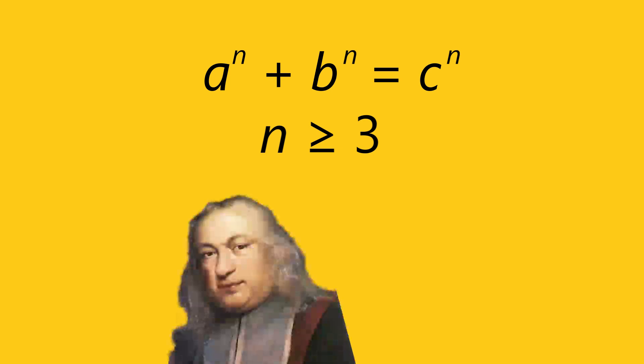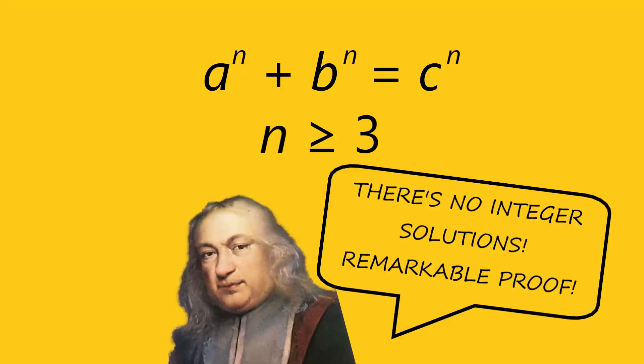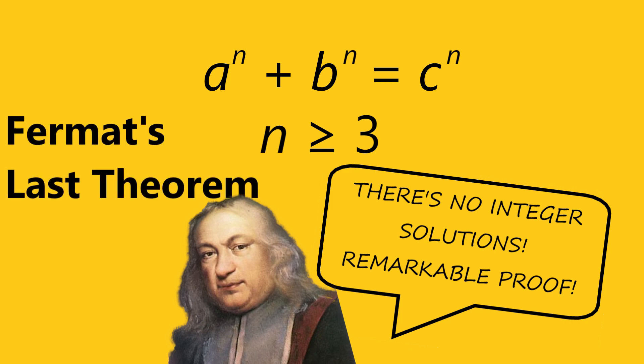Well, in 1637, Pierre de Fermat wrote in the margins of his copy of Arithmetica by Diophantus of Alexandria that for the equation a to the n plus b to the n equals c to the n, where n is greater than or equal to 3, there are no integer solutions at all. He also said that he found a remarkable proof of this fact, but that he didn't have the room to write it there in the margins. But after he died, no one was ever able to find any evidence that he ever wrote that proof down, and this theorem has become commonly referred to as Fermat's last theorem.